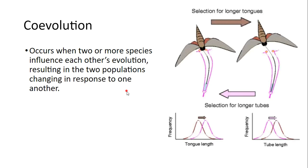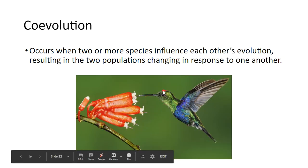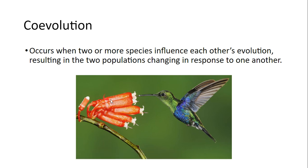Another example of co-evolution is a moth. The longer the tongue, the longer the selection for longer tubes — the same thing we saw with our hummingbird, developing a longer beak in order to get the nectar at the very bottom of the flower.